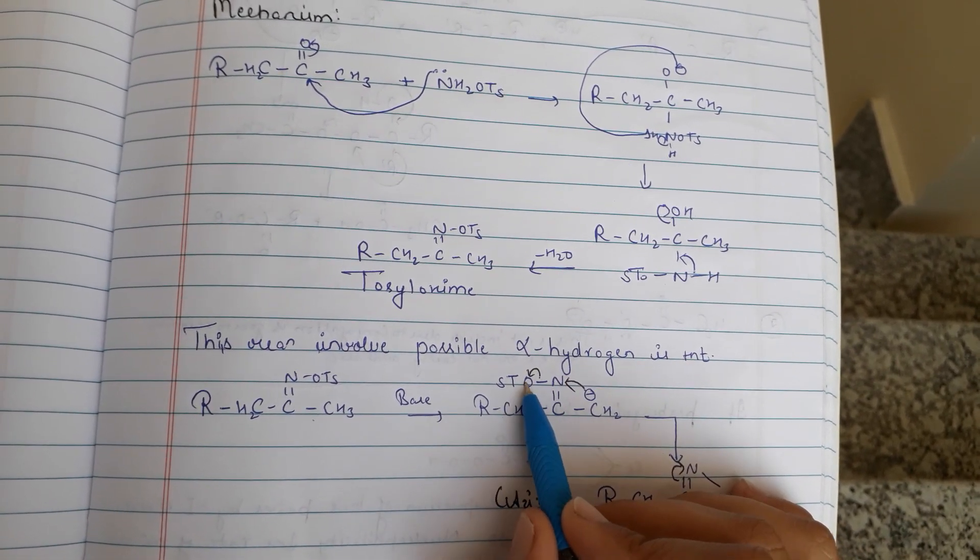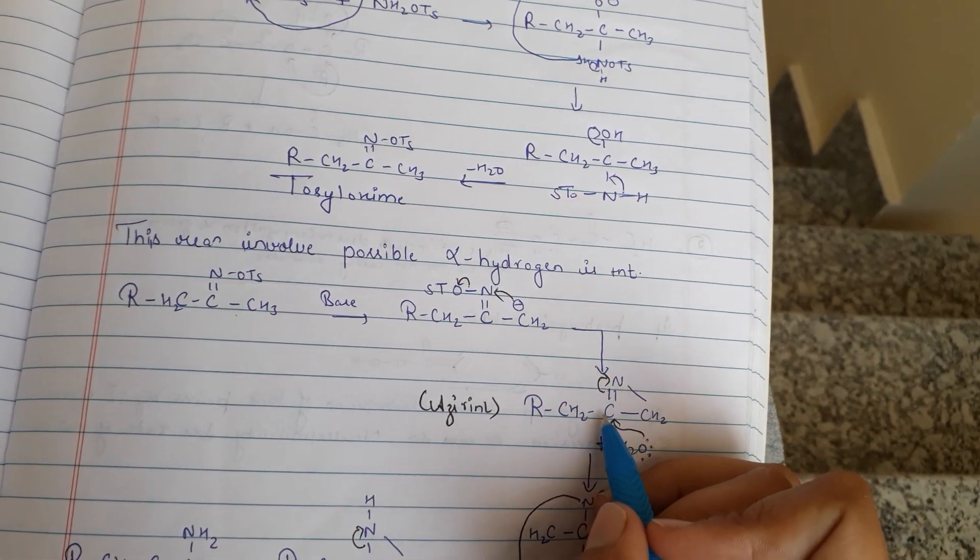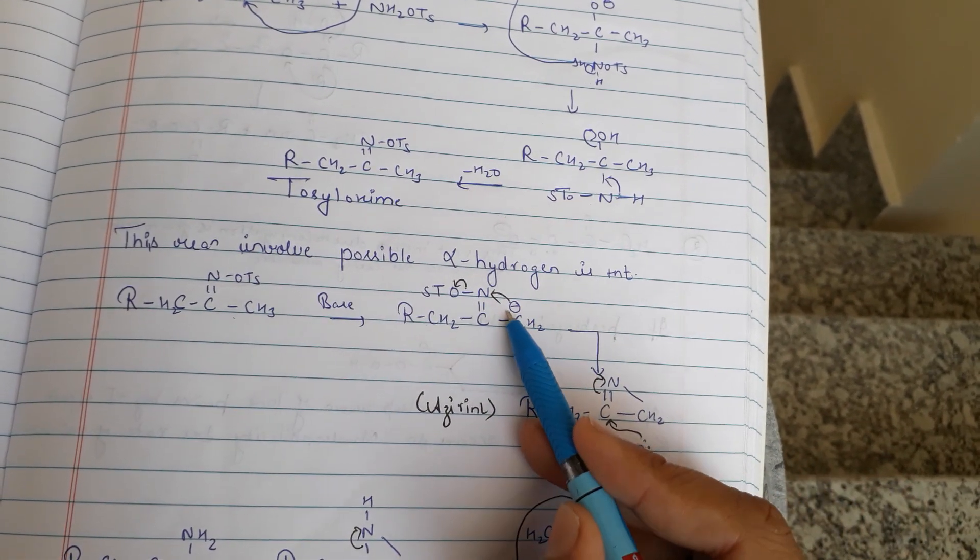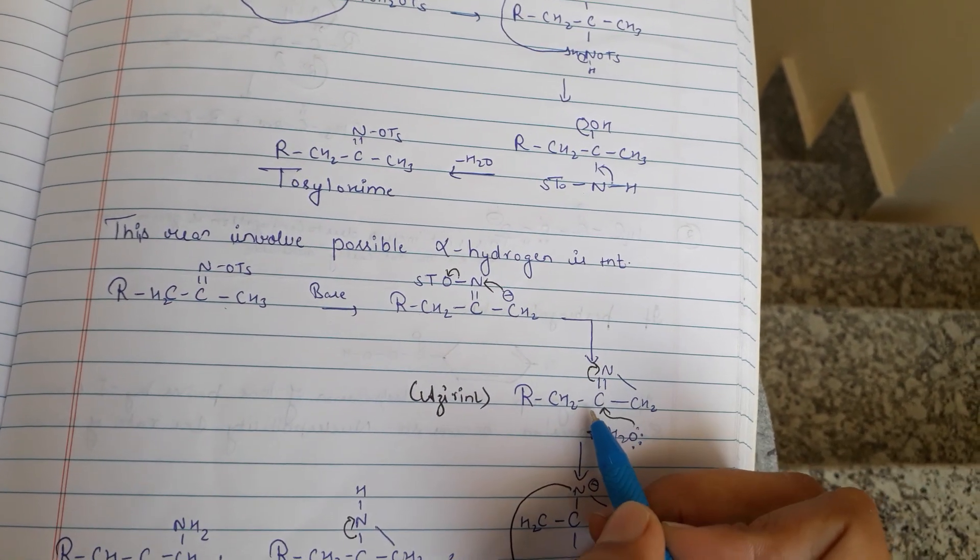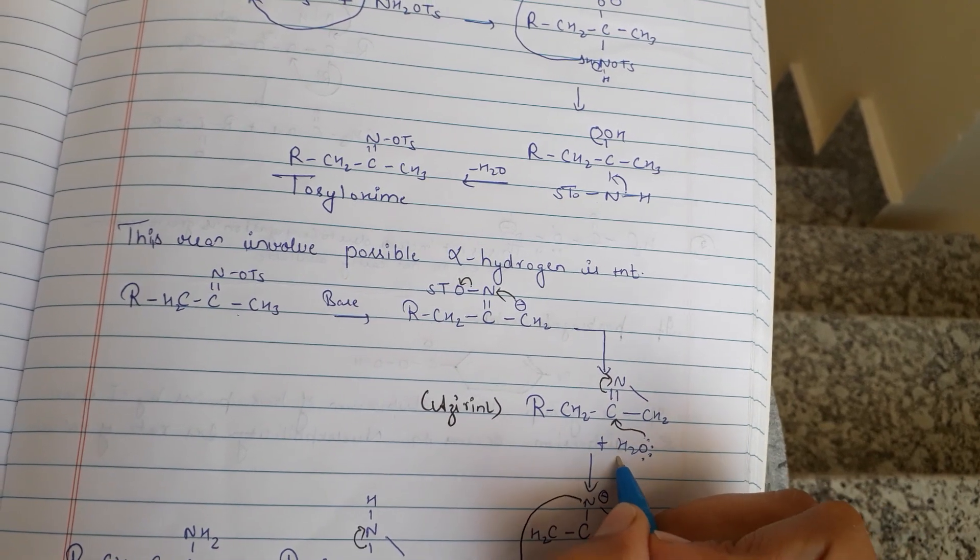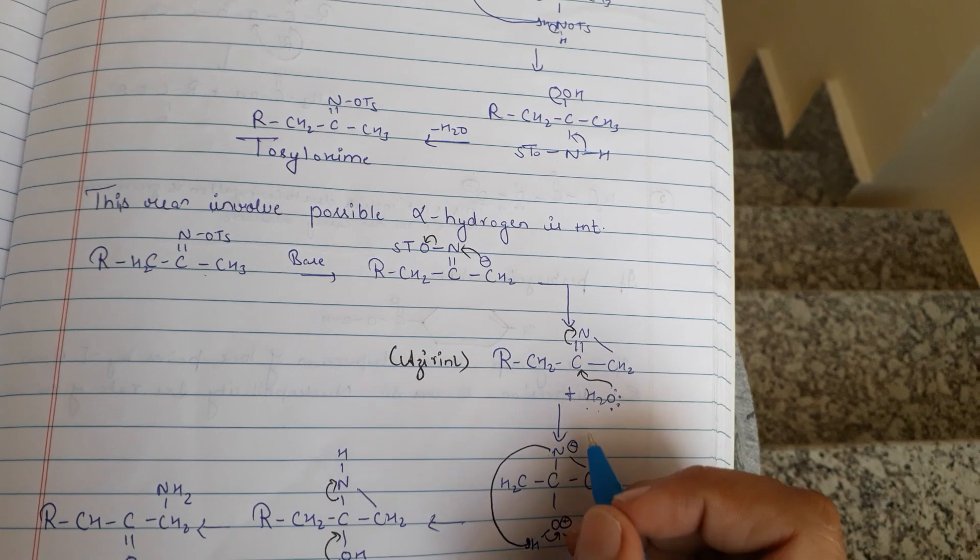And that tosyl will leave from there because it's a good leaving reagent. Now this CH2 will make a bond with this carbon, and this double bond shifts here. Then upon hydrolysis with H2O, this will shift here on that carbon.